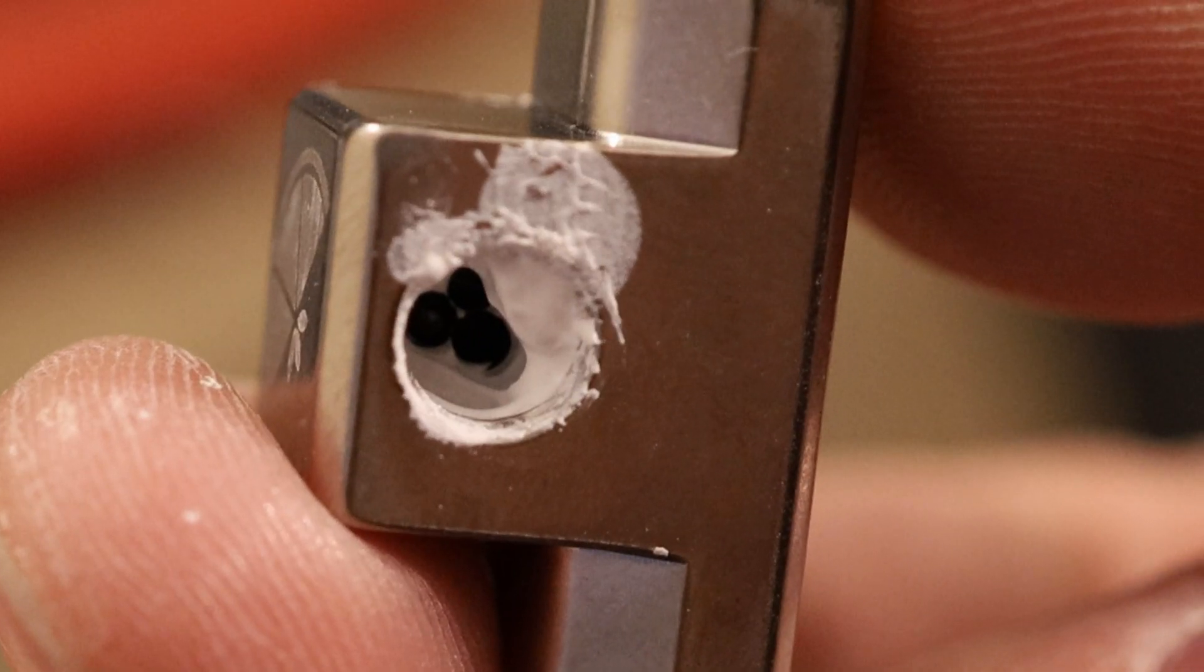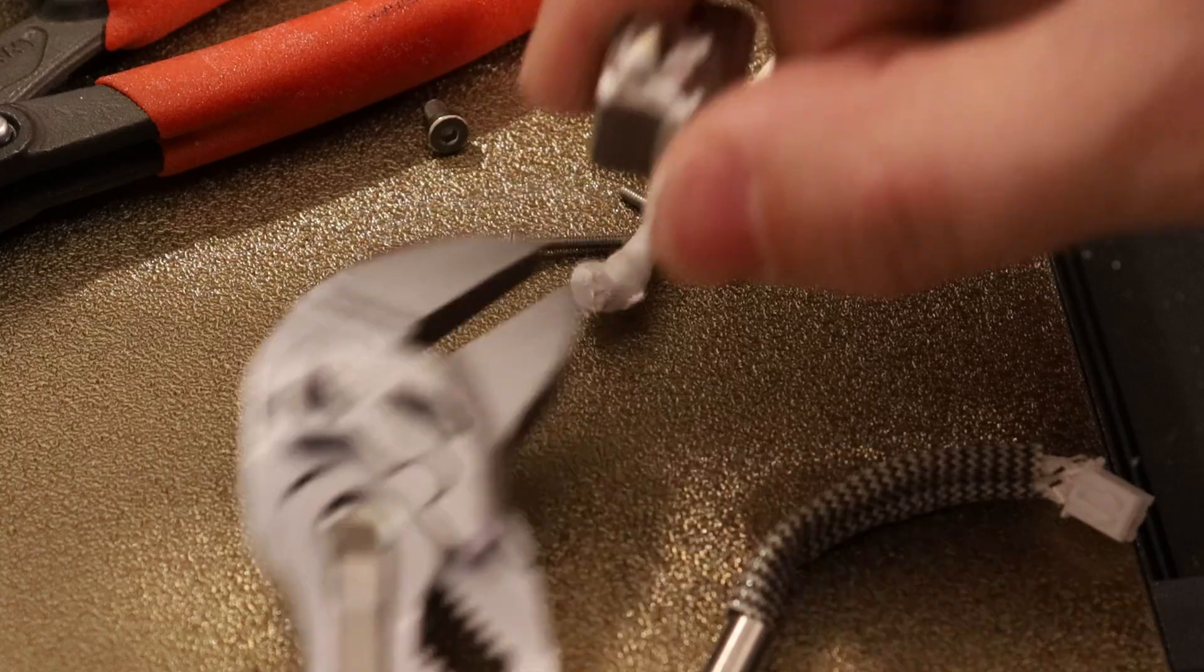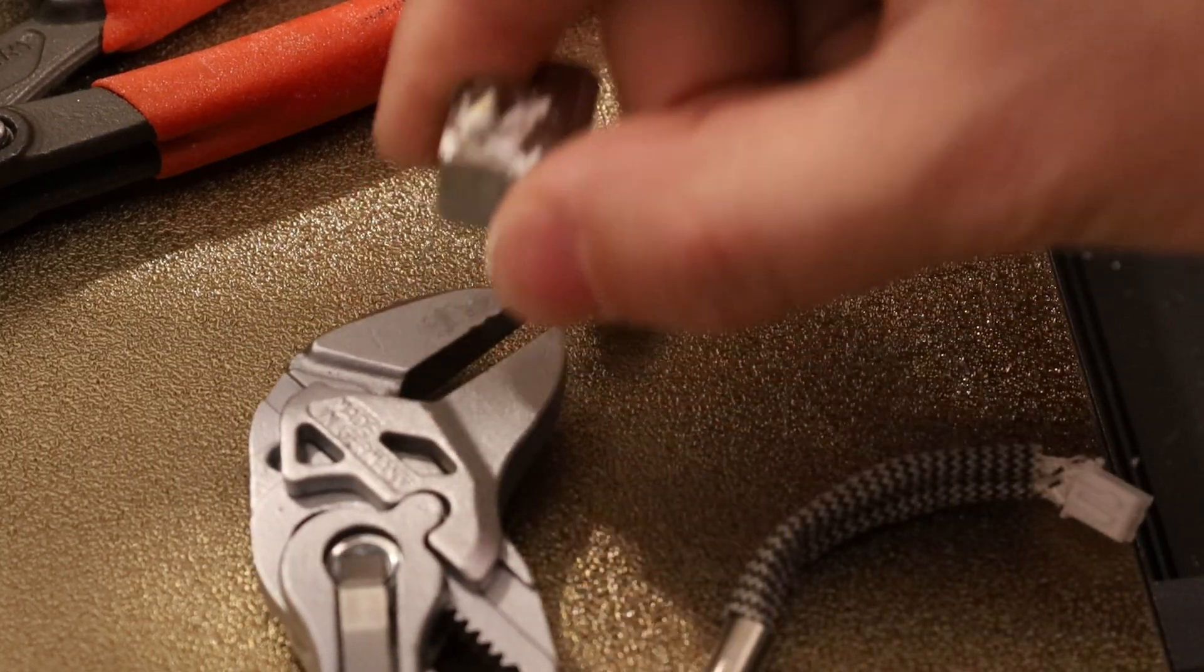The boron nitride paste was covering all of those holes earlier, but I smacked it against the ground like this and it cleared those holes. Now I'm going to put this heat brake on.